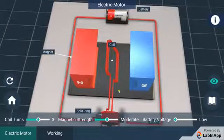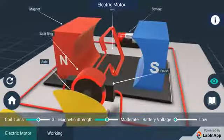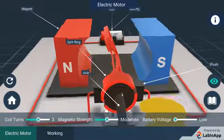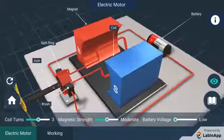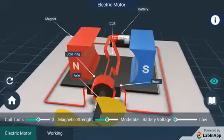The ends of the coil are connected to the two halves of a split ring. The inner sides of these halves are insulated and attached to an axle. The external conducting edges touch two conducting stationary brushes.